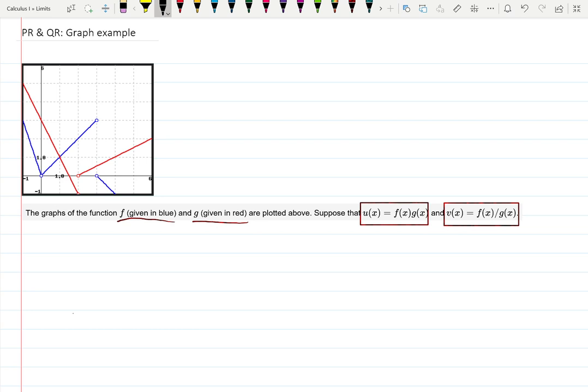But anyways, they want us to find derivative of u at 1 and derivative of v at 1. Solution. When you're stuck with something, always start with things you know. For example, u is given as f times g.